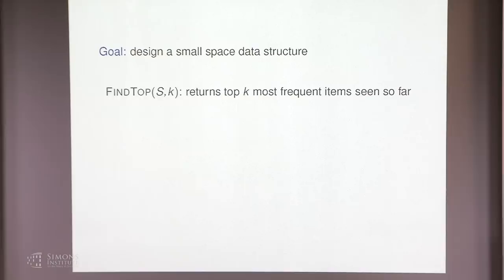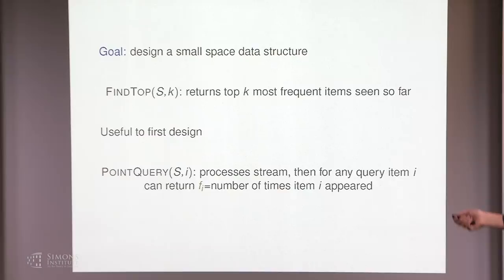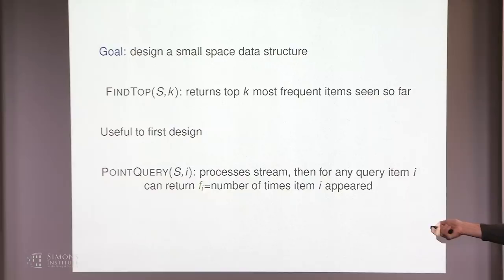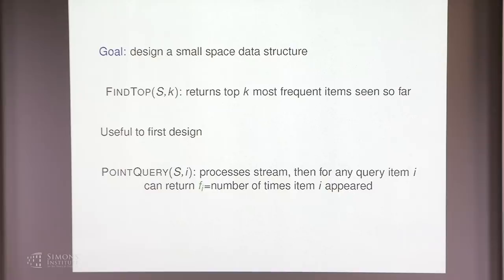Our goal is to design a primitive that scans the stream of data items and at every point in time can return the top k most frequent items. It's more useful to think about a point query operation: a data structure that processes a stream and, given an element i, outputs approximately how many times the i-th element appeared. If we have a point query primitive, it's not too hard to maintain the top k most frequent items.